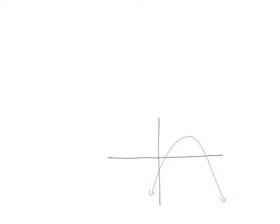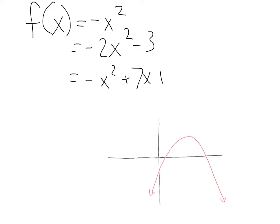Let's take a look at some cases where we have a negative x squared term. So if we had, say, negative x squared, or f of x equals negative 2x squared minus 3, or if we had negative x squared plus 7x plus 2. All of these graphs are going to be facing the opposite direction. These arrows are going to be both facing down. And we have an upside down U.